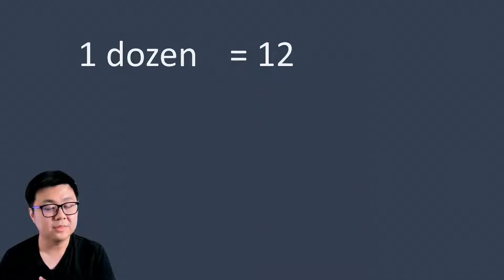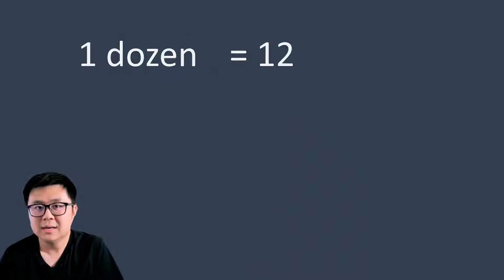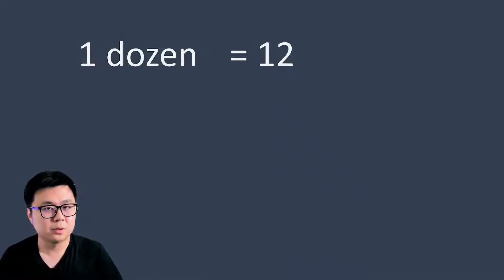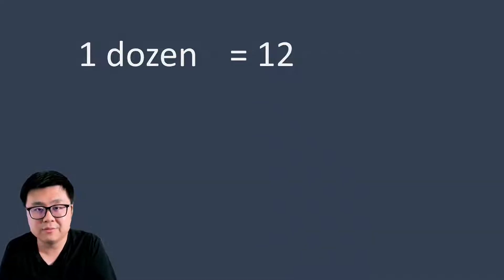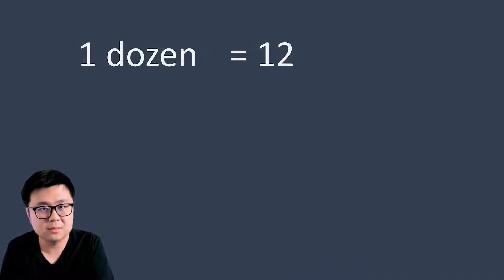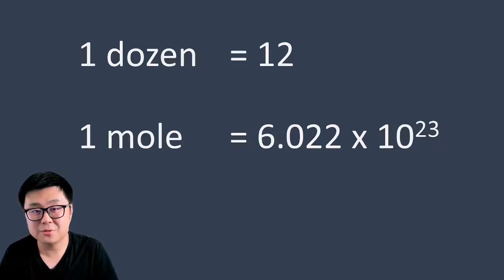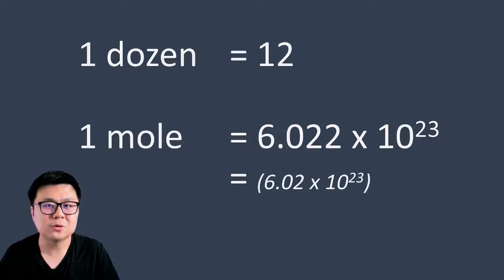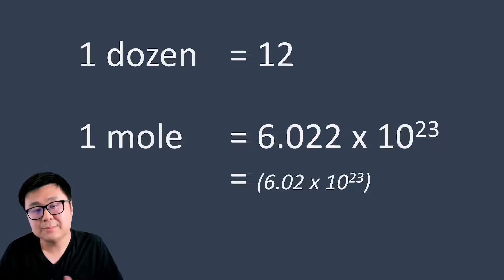If I said the word dozen, you would think of 12, because the word dozen — although it's not a number, it's a word — it specifically represents the number 12. Just 12, not 12 eggs or 12 pieces of bread. There's no item associated with the word dozen. Same idea with mole: one mole is 6.022 times 10 to the power of 23. Your teacher may use 6.02 times 10 to the 23 depending on how many decimal places they want you to keep.